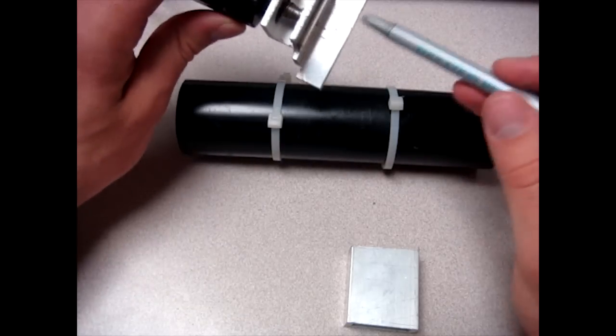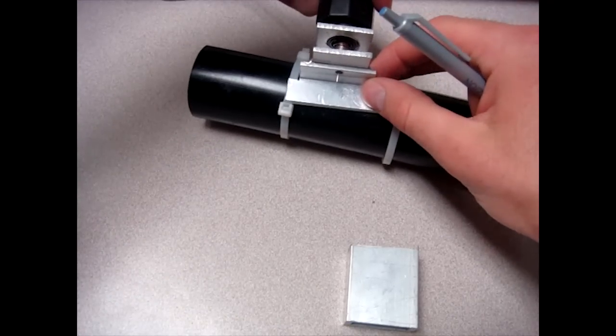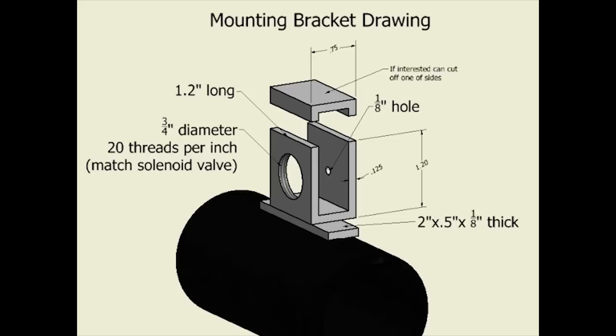The next step in our process is to make the bracket that will hold the solenoid valve onto the tube like this. Here is a drawing that shows you the dimensions and also some of the basic steps. But I will go ahead and show you in person some of the things to do.